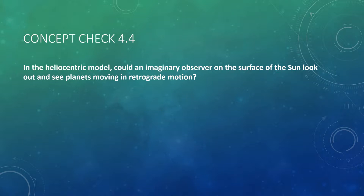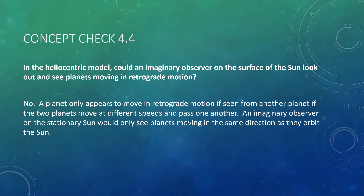The answer is no. A planet only appears to move in that backward retrograde motion if seen from another planet, where the two planets move at different speeds and pass one another. An imaginary observer on the stationary Sun would only see planets moving in the same direction as they orbit the Sun. So you wouldn't get retrograde motion from the Sun.